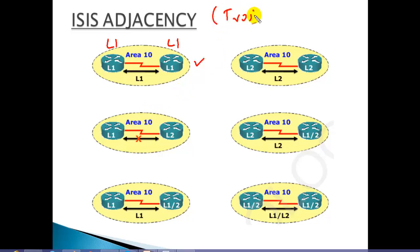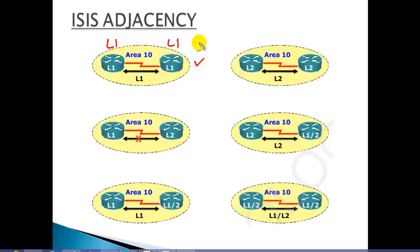If you misconfigure these levels, it is going to affect your neighborship and also affect your exchange of routes. Whenever you are troubleshooting IS-IS, the first thing you need to make sure is that the routers are configured with appropriate levels so that they can exchange routes. This works when both routers are in the same area and both are Level 1.